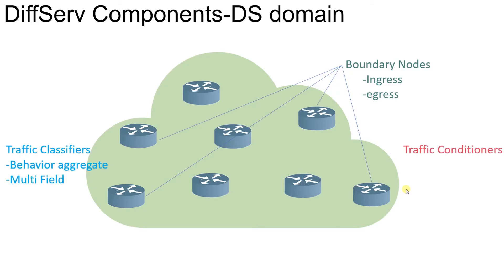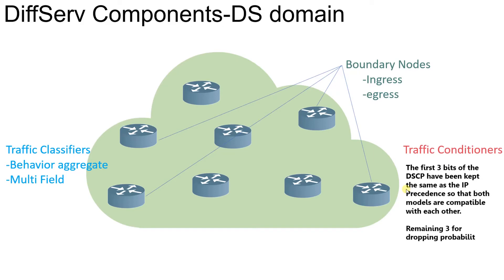Traffic classifiers define how we classify traffic. The first method is behavior aggregate classification, which depends purely on DSCP values. The second method is multi-field classification, where traffic is configured based not only on DSCP values but also on source address, destination address, the protocol carried, and source and destination port numbers.